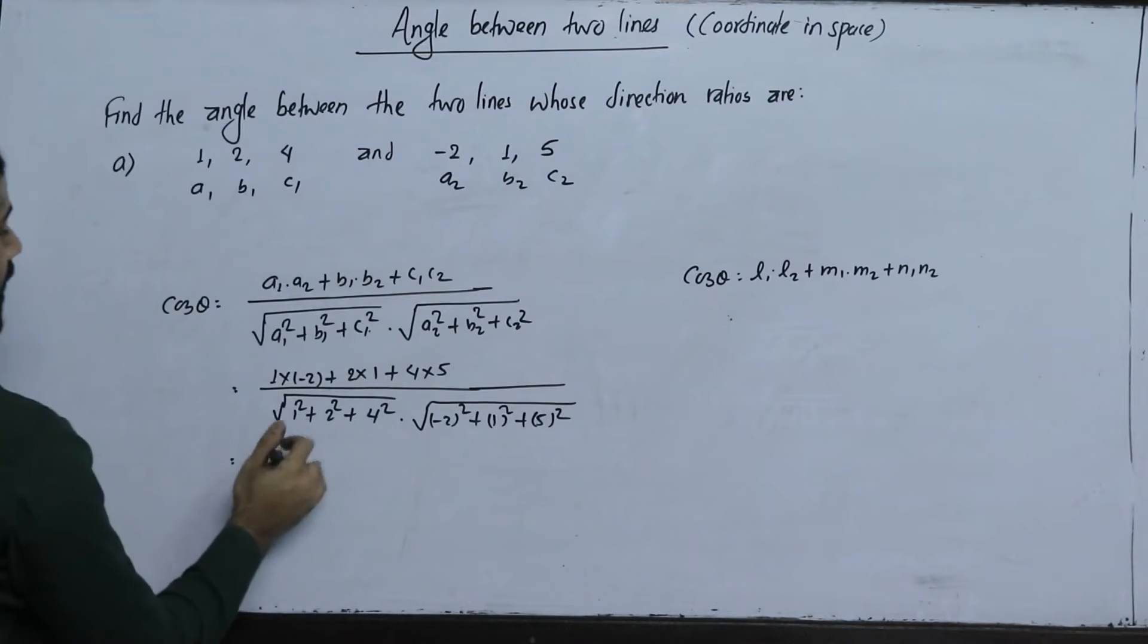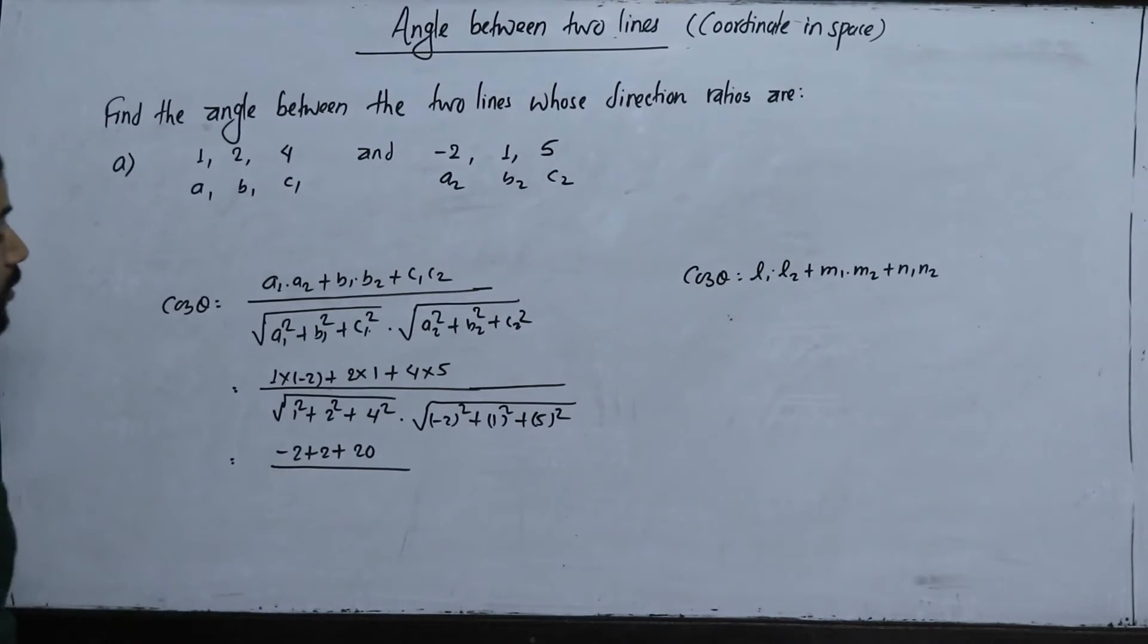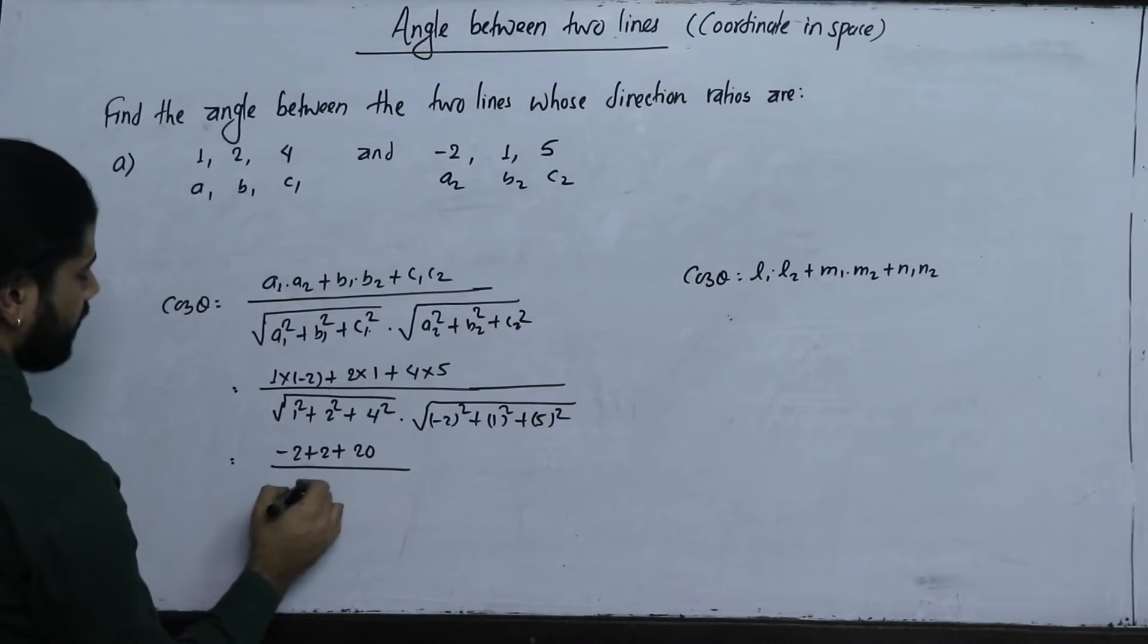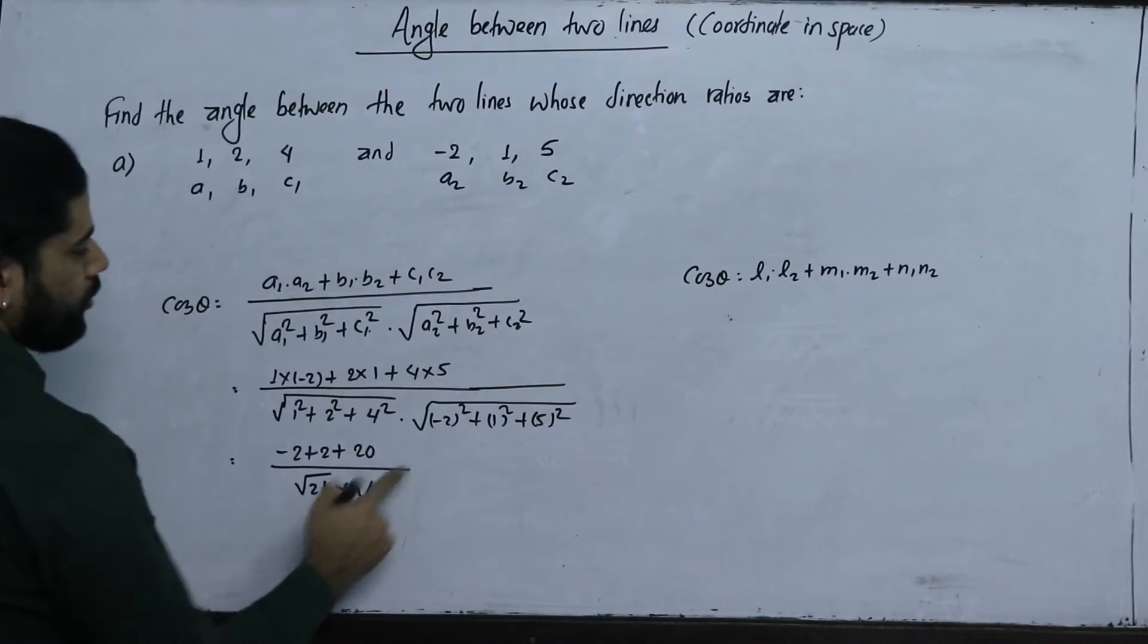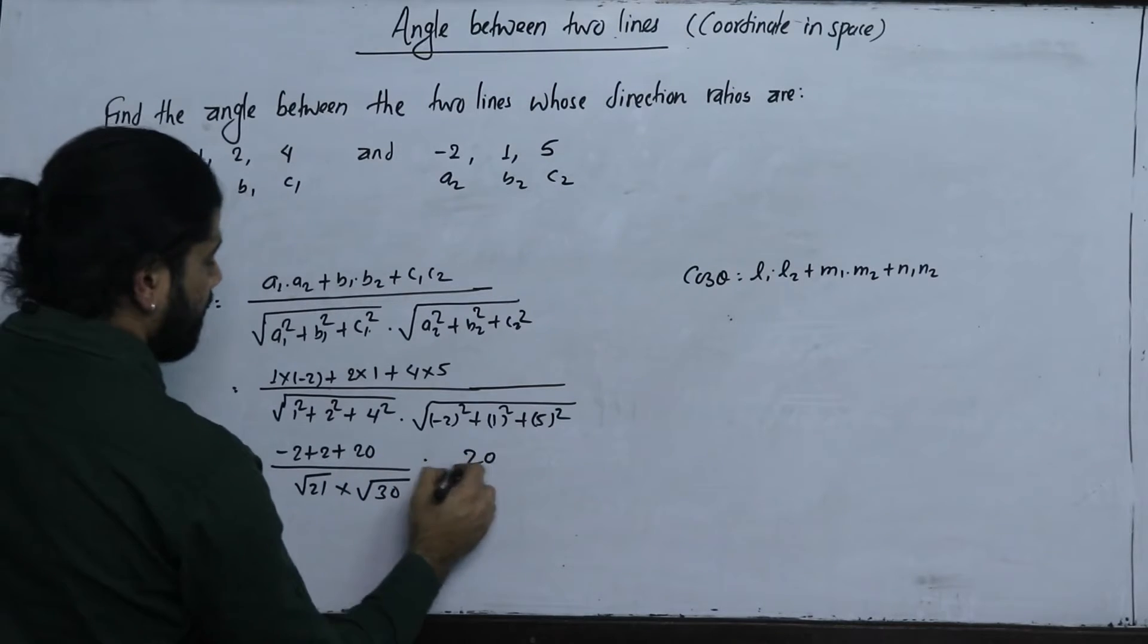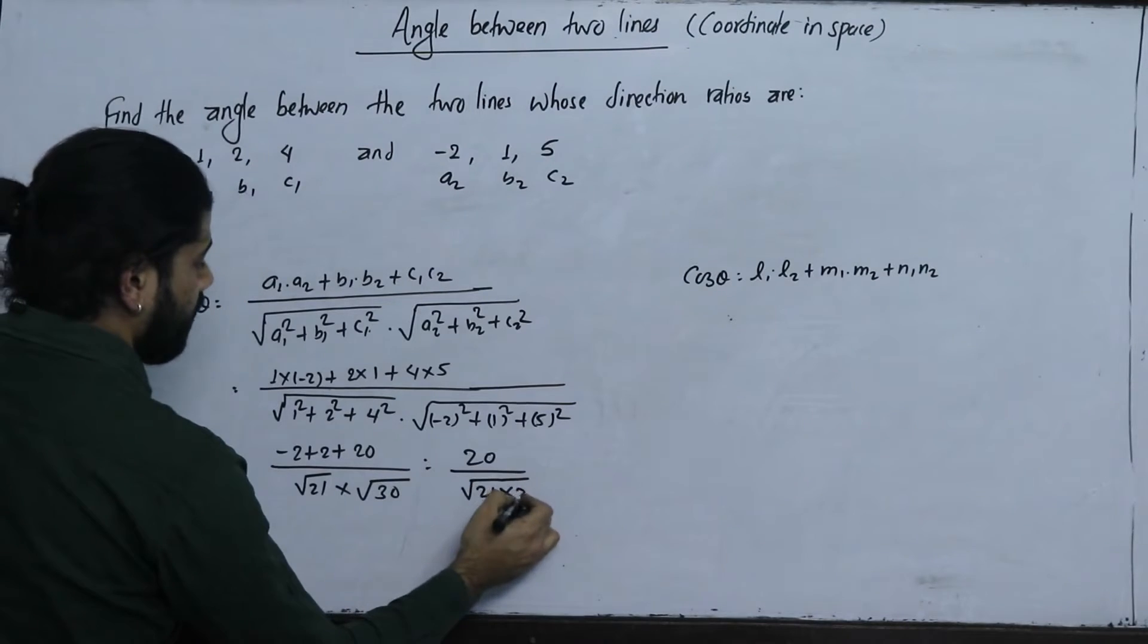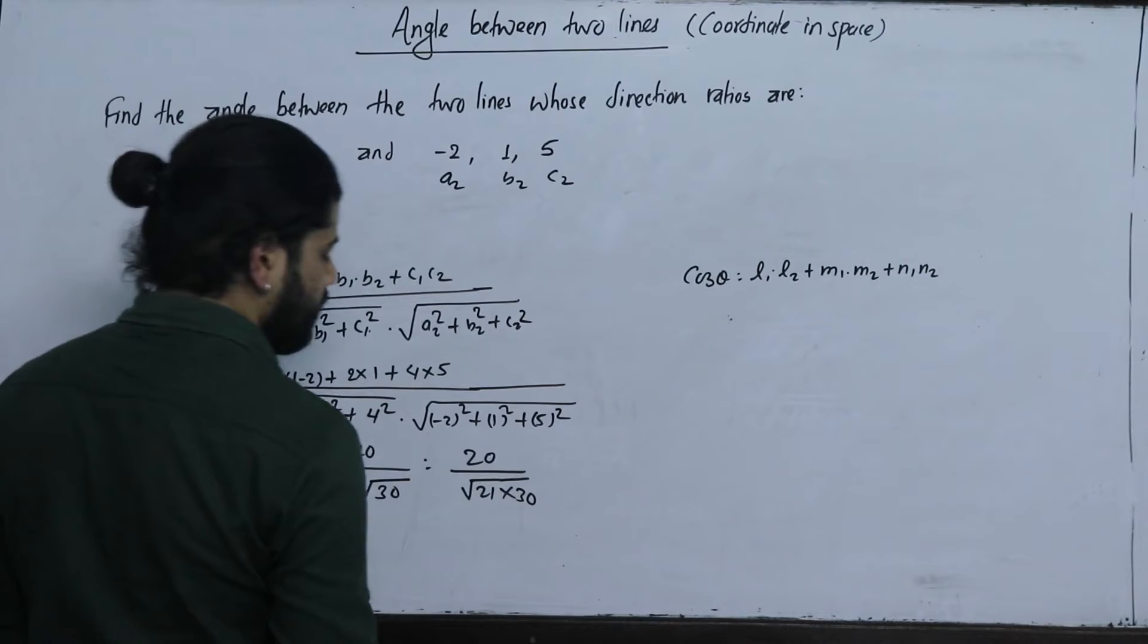So 1 plus 2 plus 4 is 21. Under the root, 1 square plus 2 square plus 4 square is 21. Minus 2 square plus 1 square plus 5 square is 30. And you can see how the answer is calculated.